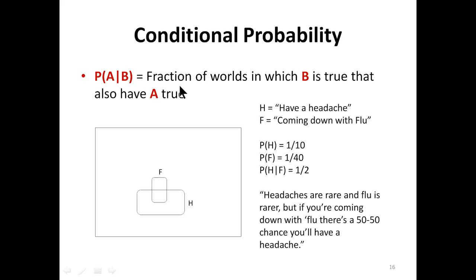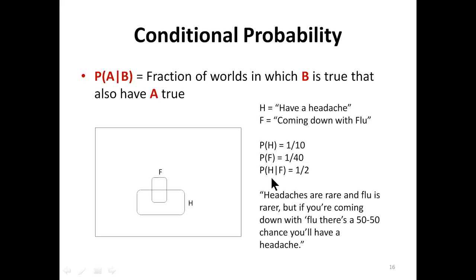Conditional probability is the fraction of worlds in which B is true that also have A true. For example, H is having a headache and F is coming down with flu. The probability of H is 1 over 10 and the probability of flu is 1 over 40. Conditional probability means: whoever is having flu and also has a headache — that fraction is 1 over 2. Headaches are rare and flu is rare, but if you are coming down with flu, there is a 50-50 chance you will have a headache.